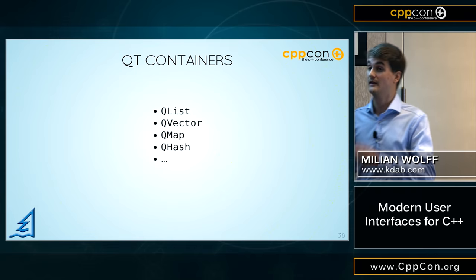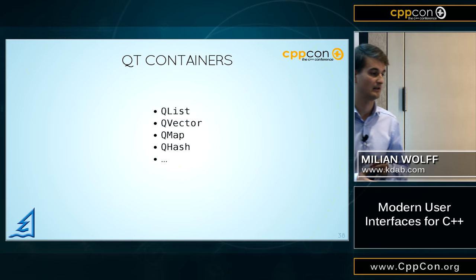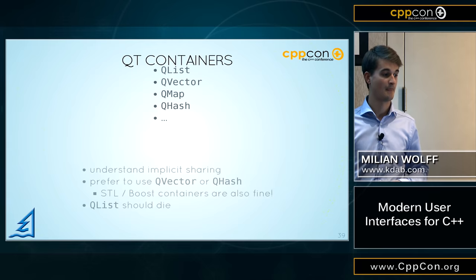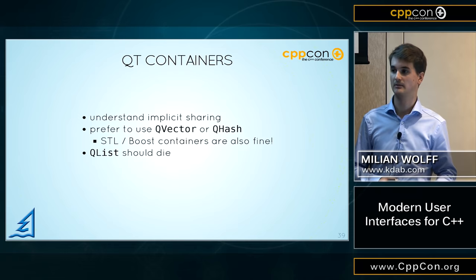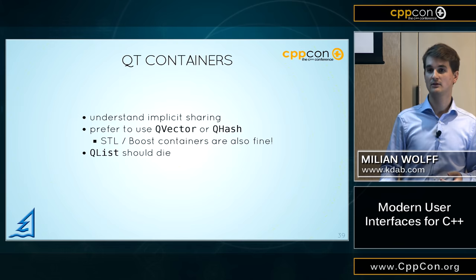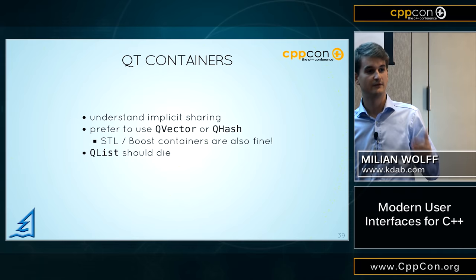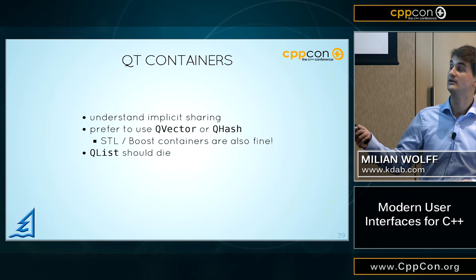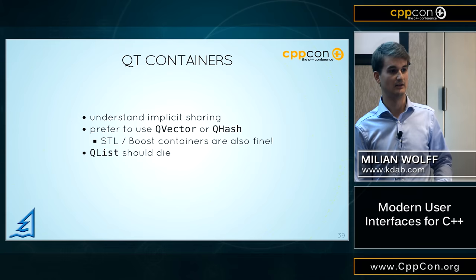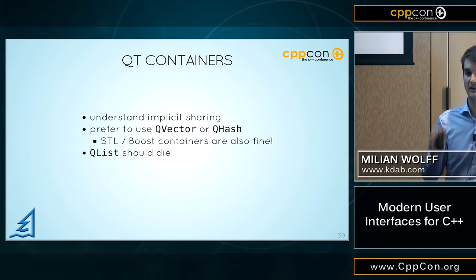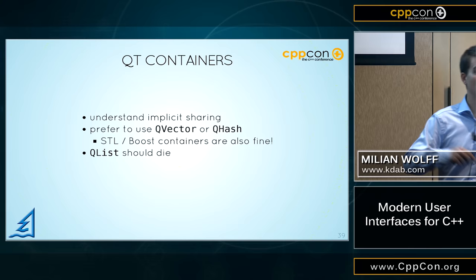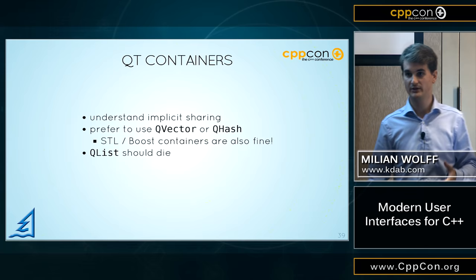The next misconception I hear again and again is that you have to use the Qt containers. Don't. There are many of them. If you use them, do understand implicit sharing — the copy-on-write pattern that Qt implements. You can write super efficient code when you leverage that properly, but it's not a magic bullet. Only use QVector and QHash by default, and the rest only if you really find a hotspot that your profiler shows you. Really do not use QList except if you have to interact with existing Qt API that uses it. In your own data models, it's super fine to use STL containers or Boost containers.